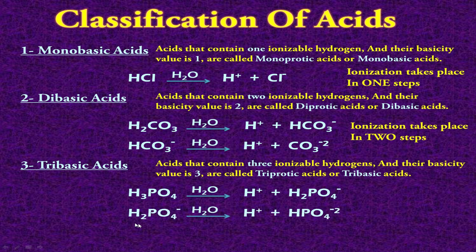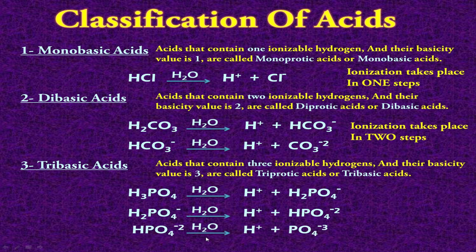In the second step, from the remaining radical, one more hydrogen ion is removed, and the remaining species becomes HPO₄²⁻. Before ionization there were two hydrogen atoms, and after this ionization only one hydrogen atom is left with the remaining radical, which now has a minus 2 charge. This remaining hydrogen atom will be removed in the third step. In the third step, the last hydrogen atom is removed and the remaining radical becomes PO₄³⁻, gaining one more negative charge to become minus 3.